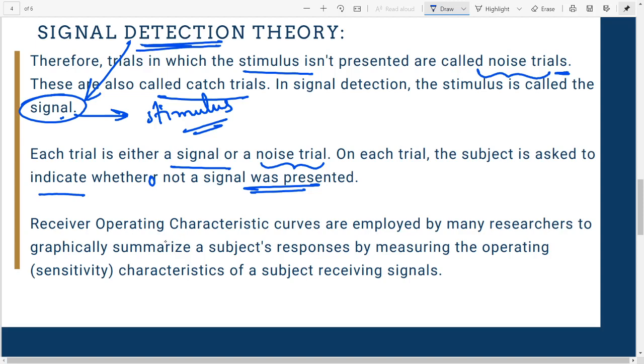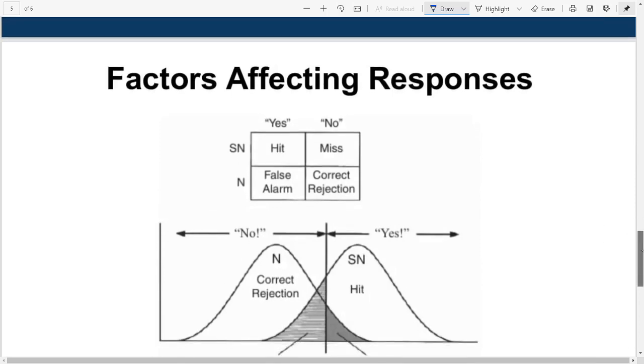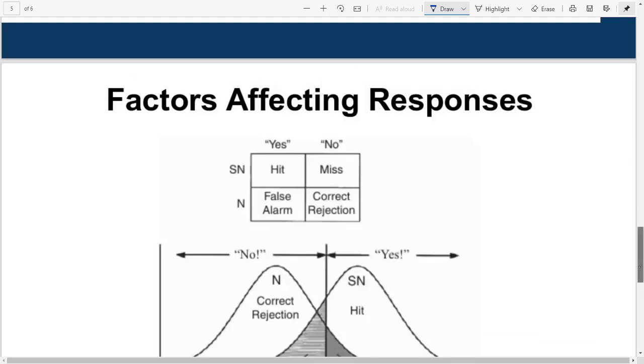Receiver Operating Characteristic curves—the full form was asked in NET, so please remember: ROC refers to Receiver Operating Characteristic. These curves are drawn to show how a person's responses are, by measuring sensitivity of a subject and how they're receiving the signals. Let's look at one of these ROC curves.